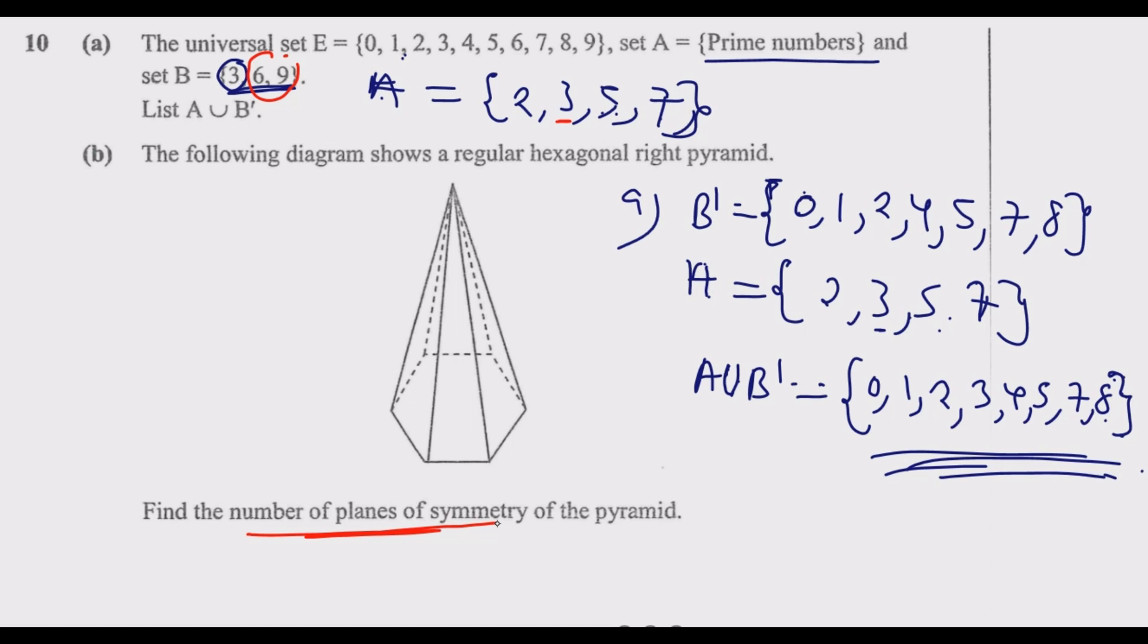So we are looking for the number of planes of symmetry. When you hear the word 'number of planes of symmetry,' you are talking about the line of symmetry, except that in this case we are dealing with a 3D shape. The plane of symmetry deals with 3D, the line of symmetry is 2D.